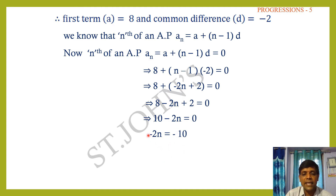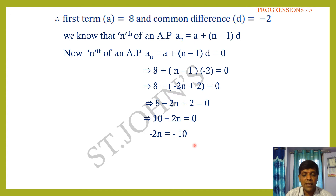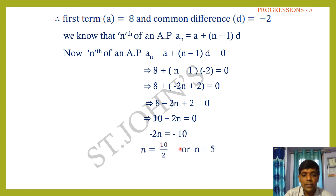Now use the 5th term: a + 4d = 22. Substituting d = 5a/2: a + 4×(5a/2) = 22, so a + 10a = 22, giving 11a = 22, therefore a = 2.